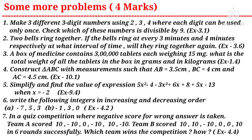Question five: simplify and find the value of the expression 5x² − 4 − 3x² + 6x + 8 + 5x − 13 when x = −2 — a question from the ninth chapter. Question six: write the following integers in increasing and decreasing order: (a) −7, 5, 3 and (b) −1, 3, 0 — a question from the fourth chapter.